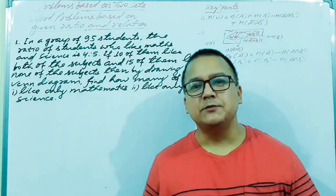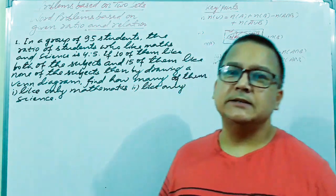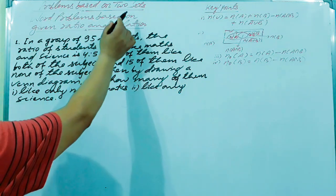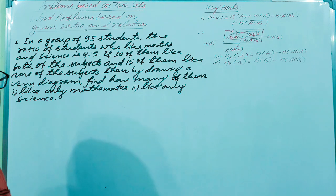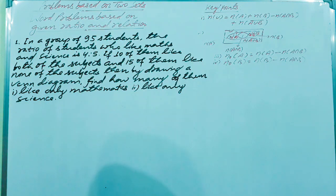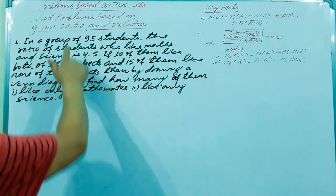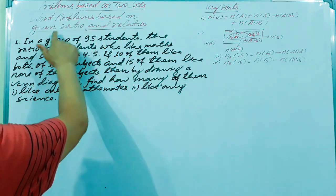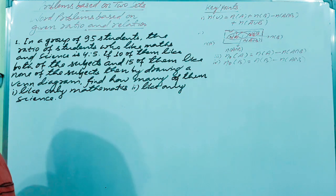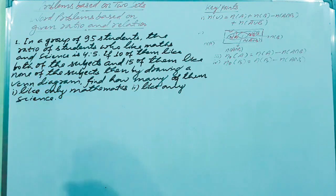Hello guys, this is Rampichan, welcome to my mathematics class. Today's topic is word problems based on two sets, especially based on the cardinality relation of two intersecting sets — problems based on given ratio and relation. I have taken one question based on this topic, and with one example I will show you how to crack this type of question.